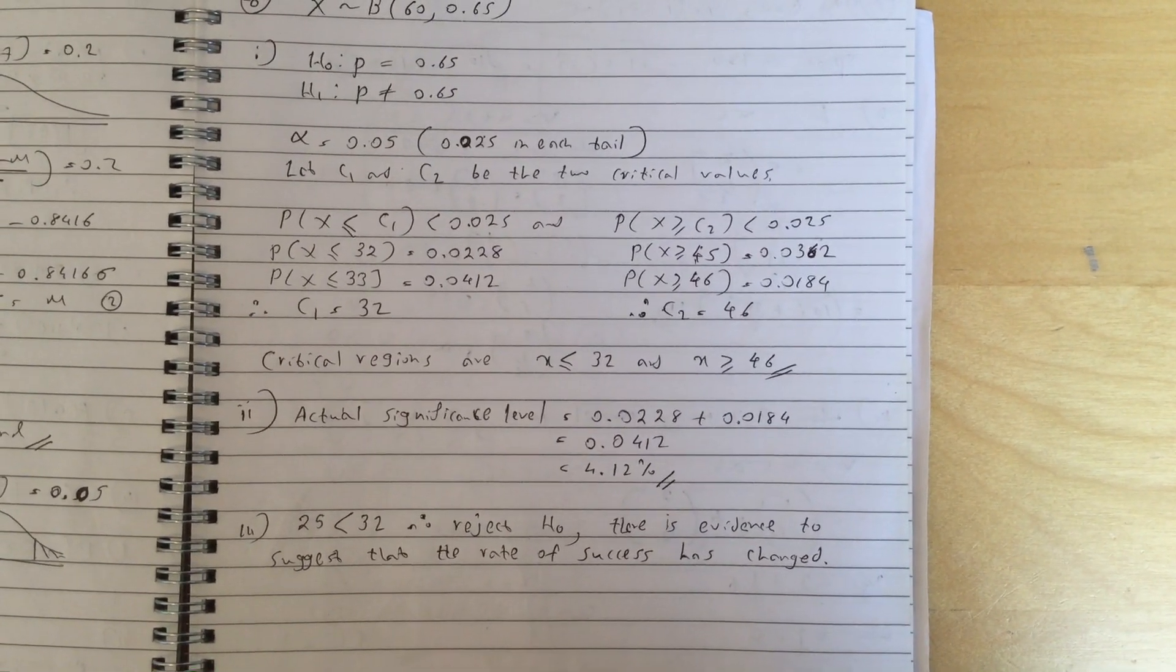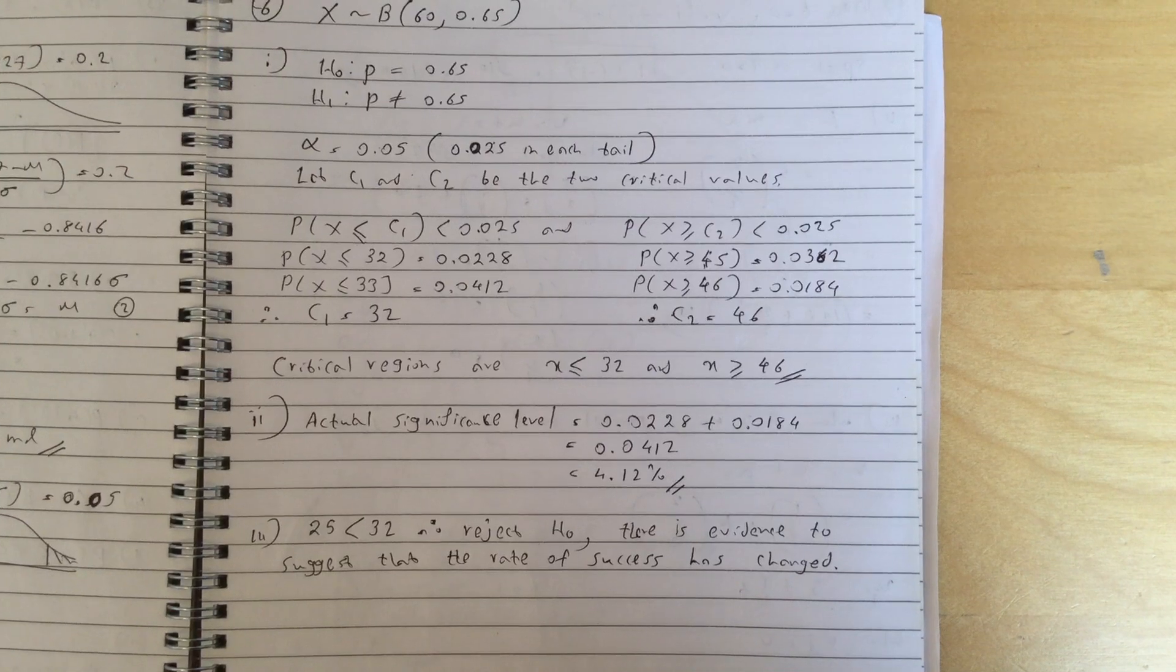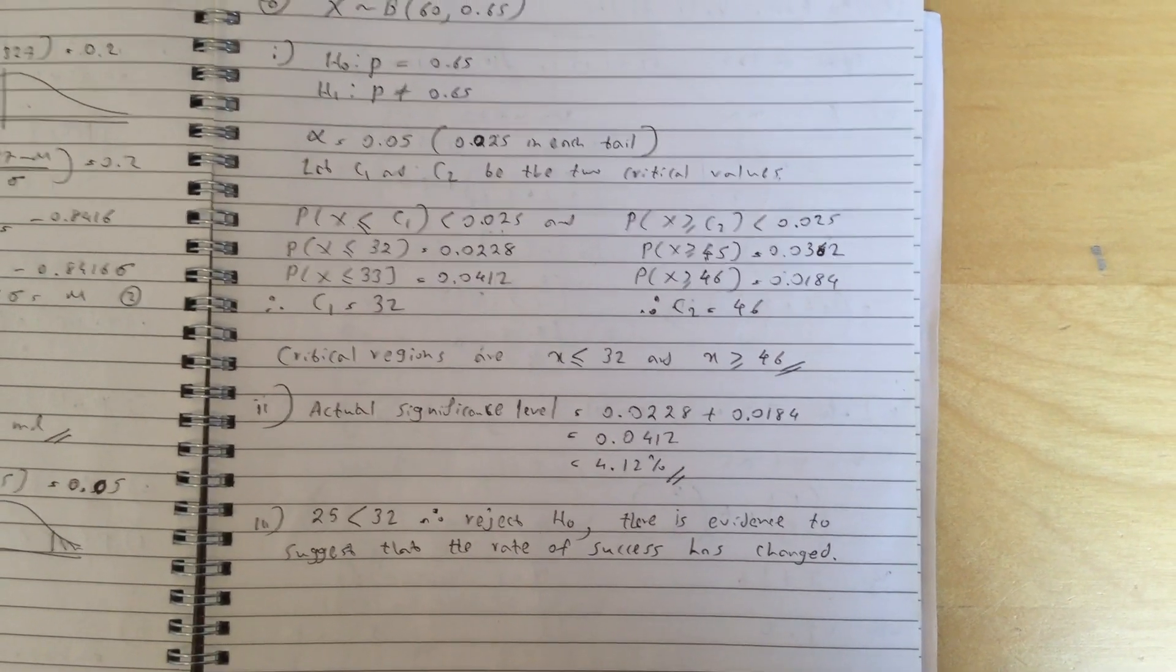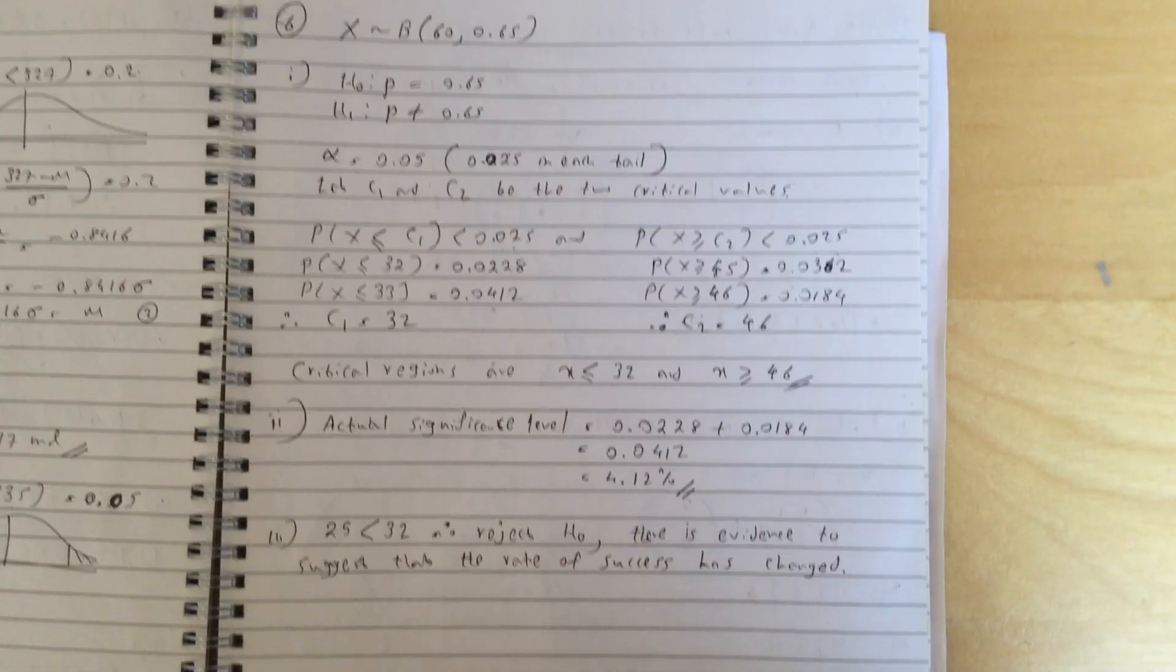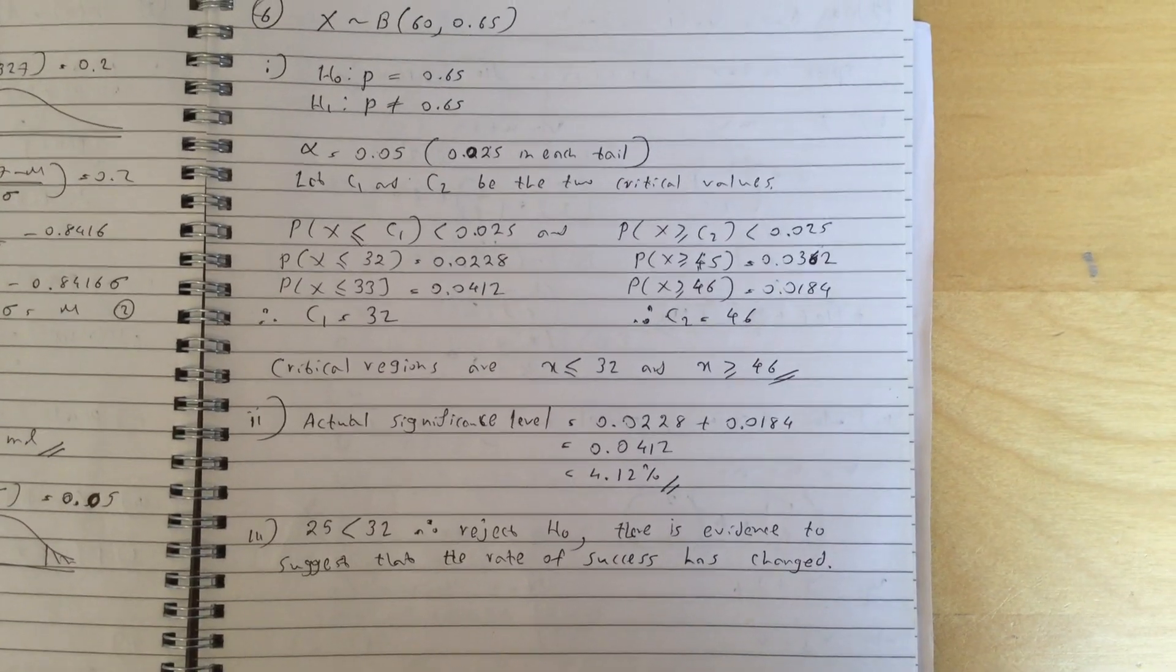Actual significant level is 4.12% and 25 is less than 32, which is in the critical region, so reject H0. There is evidence to suggest that the rate of success has changed.